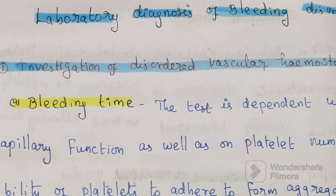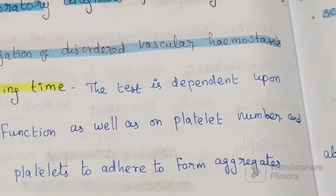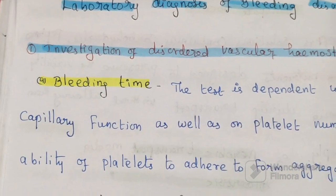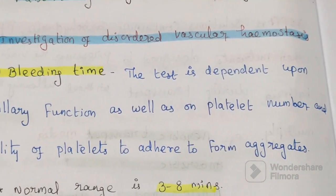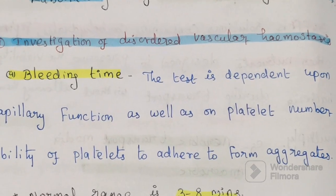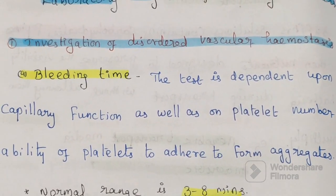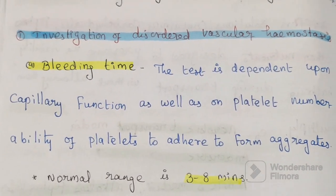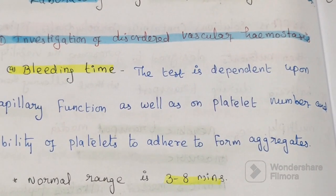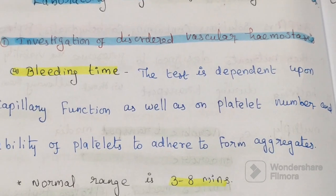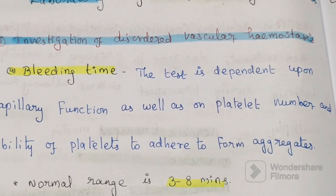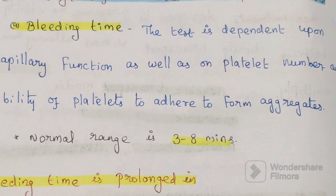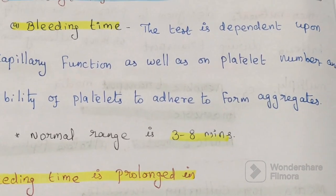The first test is bleeding time. Bleeding time depends upon two things: capillary function and platelet number, as well as the ability of platelets to adhere and form aggregates. The normal range is 3 to 8 minutes.